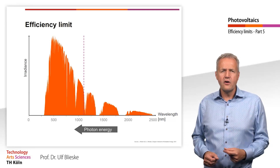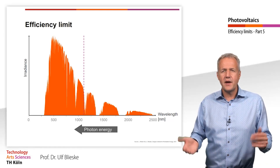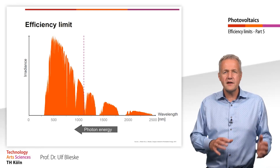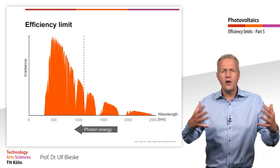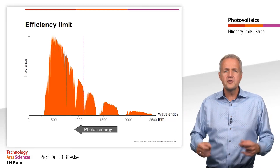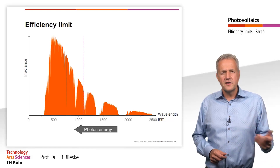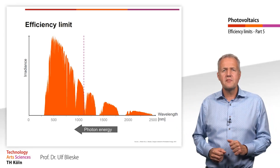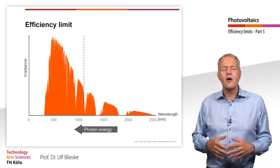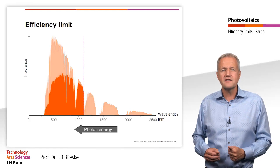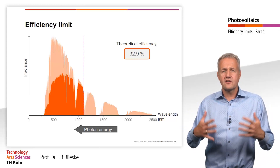Let us return to the open-circuit voltage and the short-circuit current. While the open-circuit voltage depends significantly on the band gap energy, the number of photons below the cutoff wavelength is decisive for the short-circuit current. For simplicity, let us assume that all photons below the cutoff wavelength are absorbed and that no losses occur during the transport of charge carriers. For this case, a maximum possible efficiency can be calculated as a function of the cutoff wavelength. For silicon with a cutoff wavelength of 1100 nm, the theoretical efficiency is 32.9%. This is the maximum possible efficiency for a silicon solar cell.